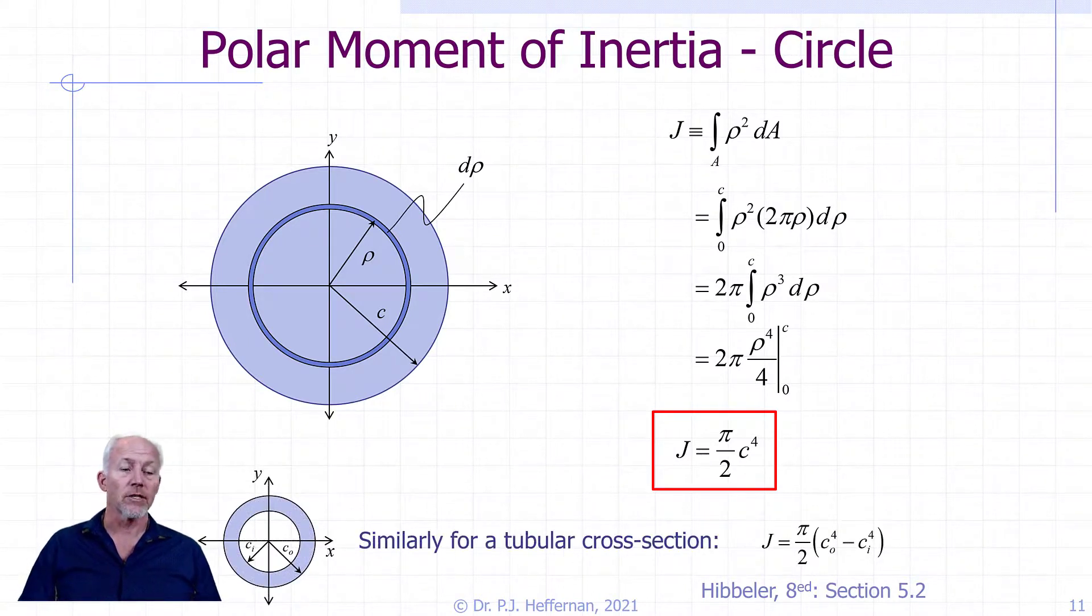Similarly, for a tubular cross section, we can derive that the polar moment of inertia is equal to pi over 2 all times the outer radius to the 4th minus the inner radius to the 4th. These values, not expected to memorize them or derive them in the future, but they are found in the geometric properties on the front flyleaf of your textbook. And you can draw that information from there whenever we're working on a problem.